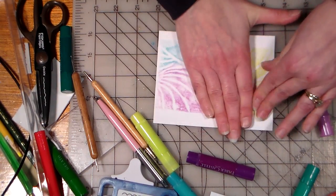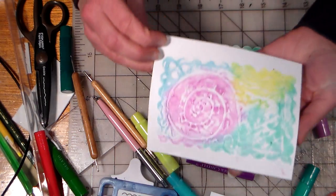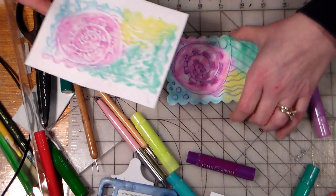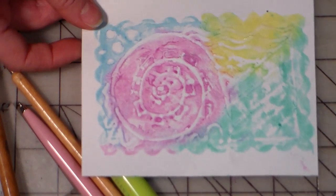And in the Derwent video, the lady used a brayer over the back, but I think this works really well. And there, we've got our little print there. Let me zoom in a little bit. Yeah, it's pretty cool.